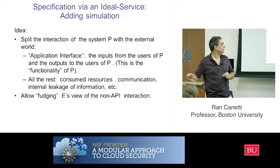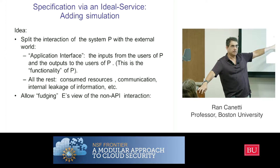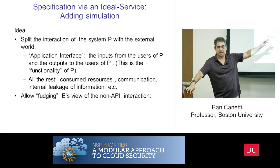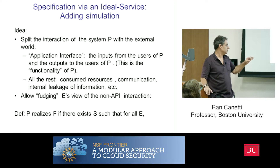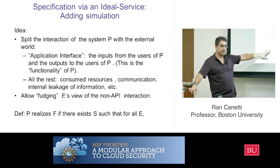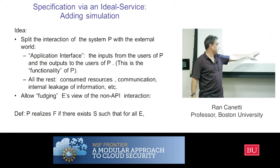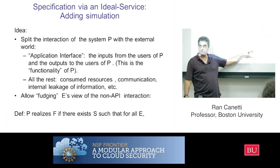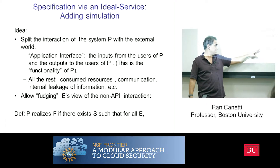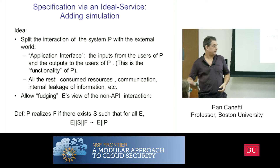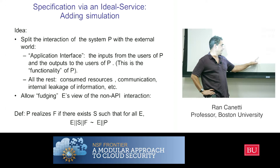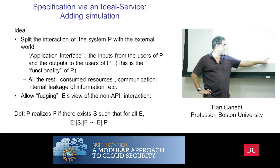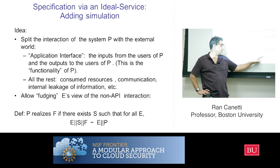So what we're going to do is allow fudging the environment's view of all the non-API interaction. Here's the definition: I'm going to say that P, my system, realizes this service if there exists some mechanism — machine, algorithm, or system — S, such that for any environment, the environment cannot tell whether it's interacting with the protocol or with the ideal service that's fudged by this simulator S.